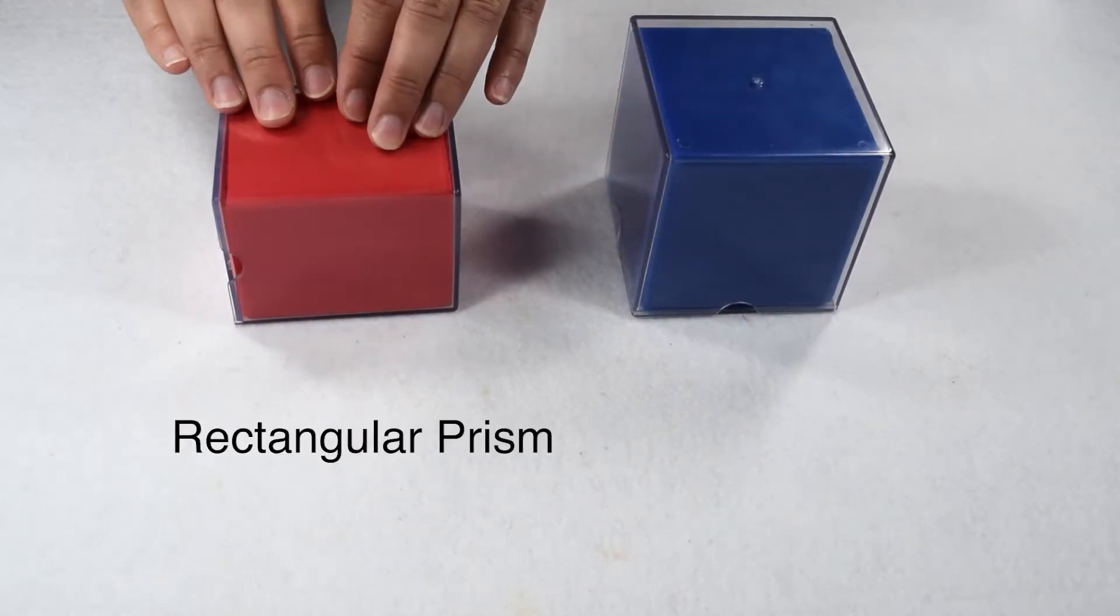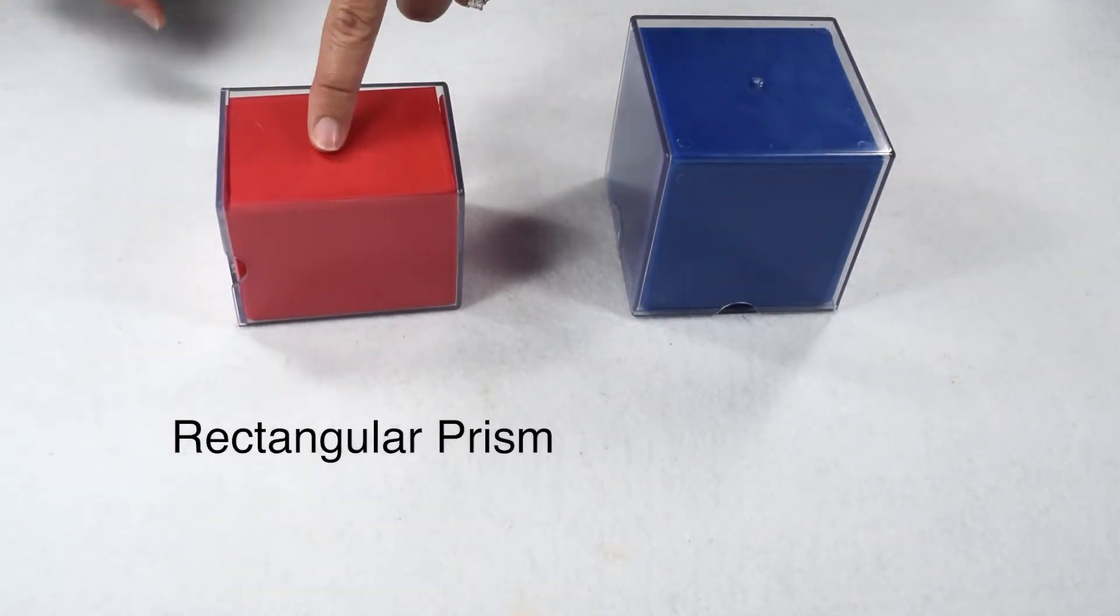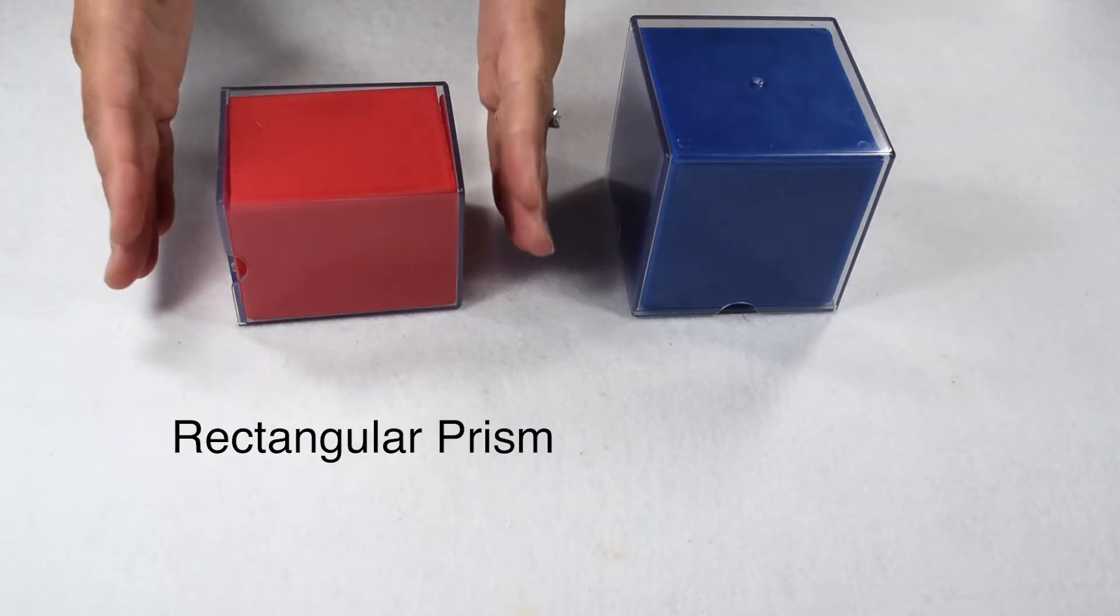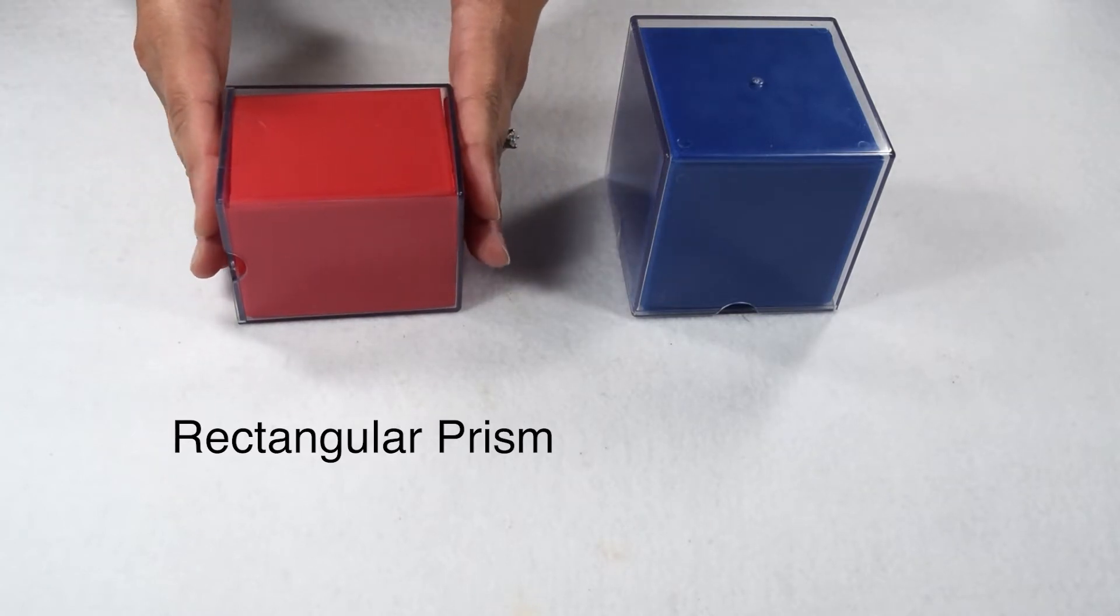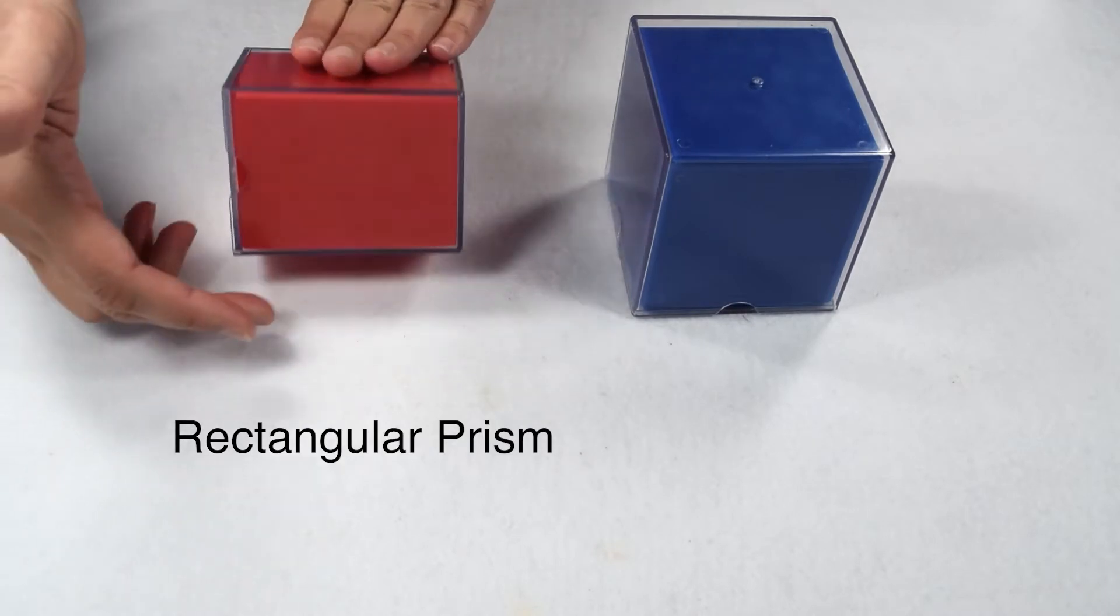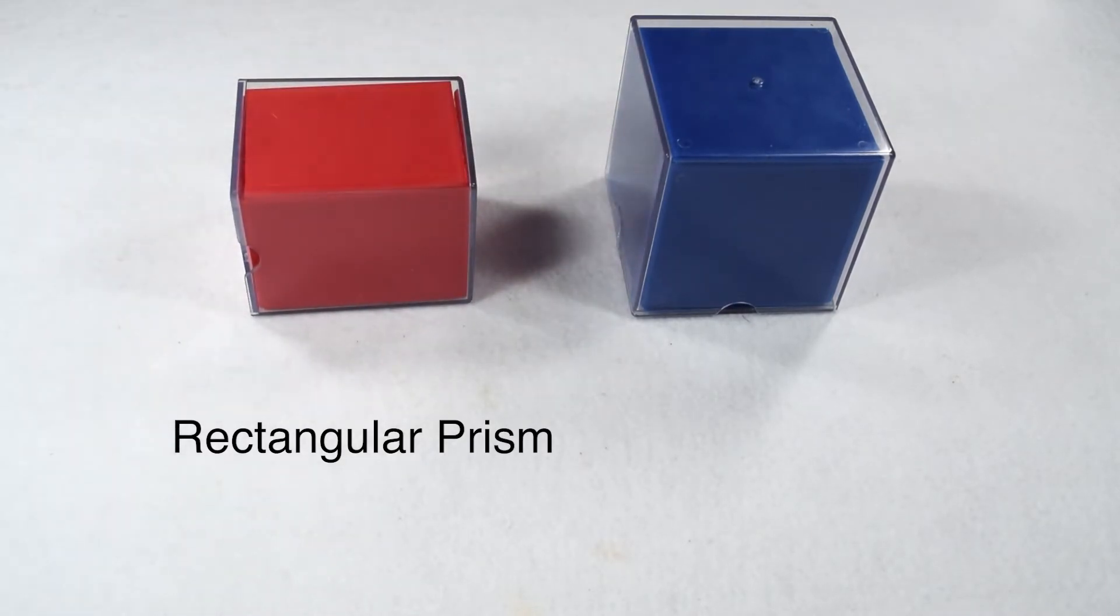On a rectangular prism, all of our faces are rectangles, not just the lateral faces. We can decide which set of faces we want to be considered the bases. These two, these two, or these two. We just need to make sure we use a set of congruent and parallel rectangles.